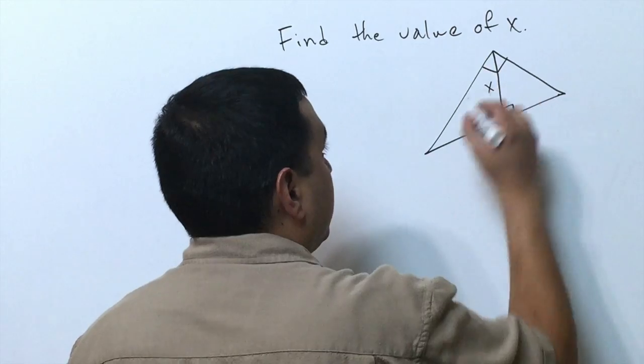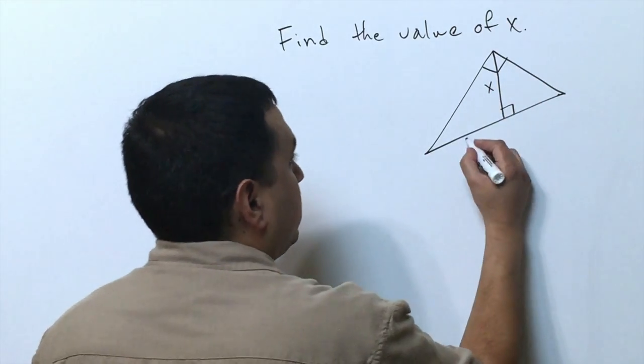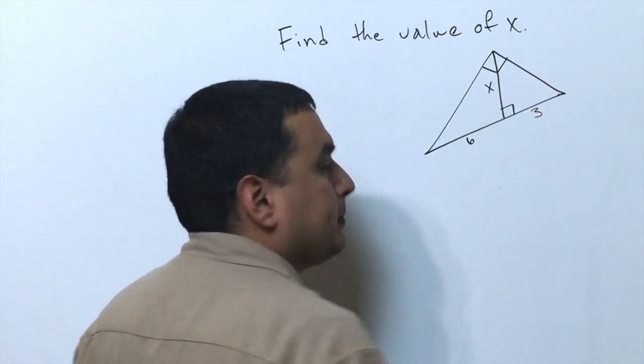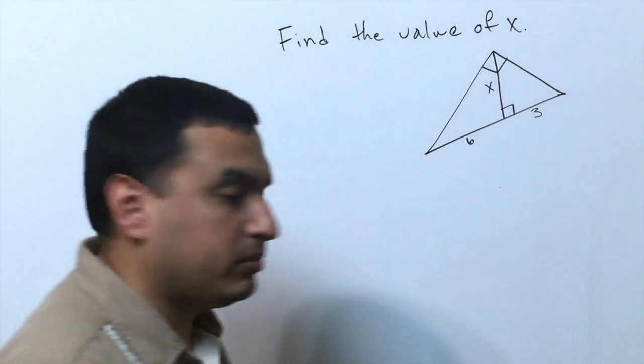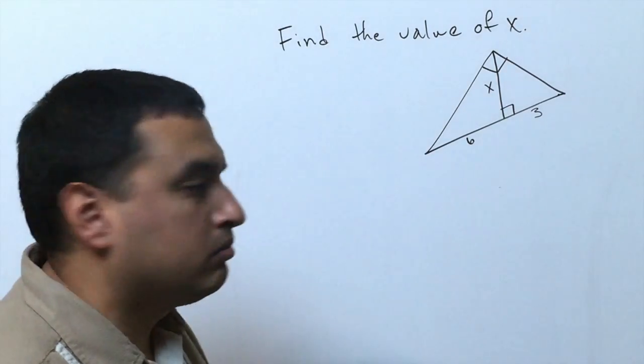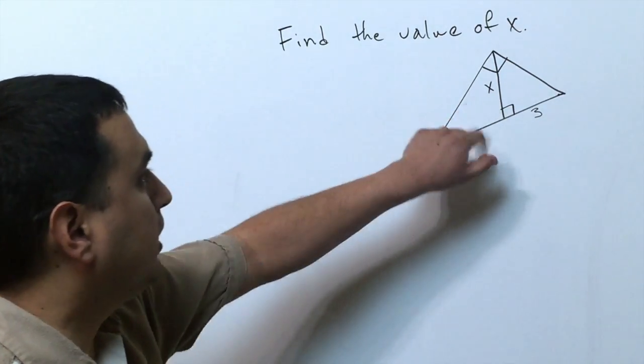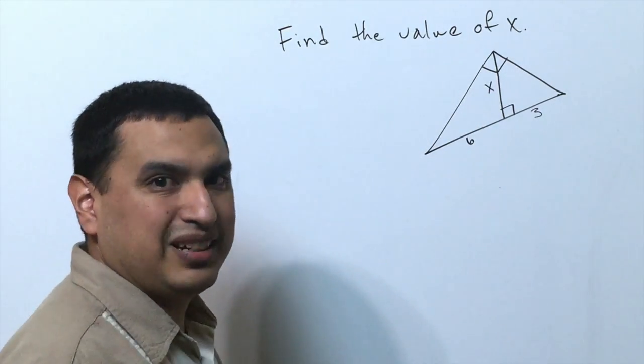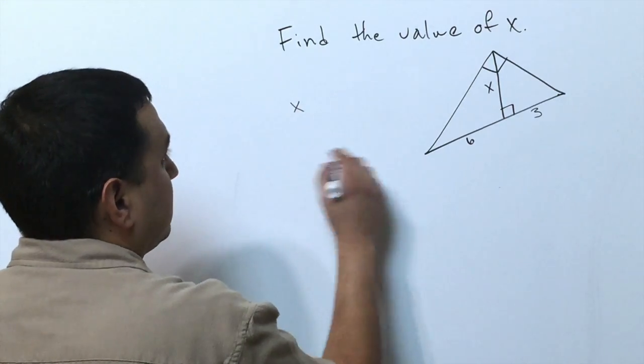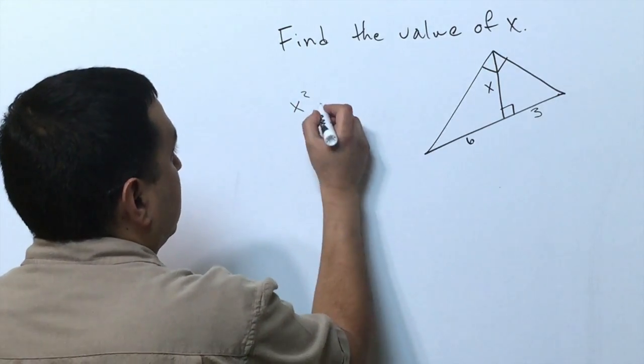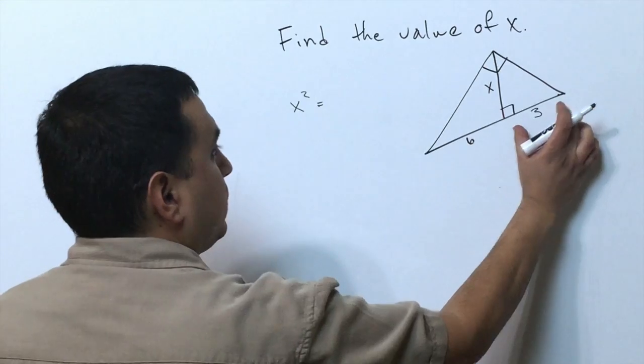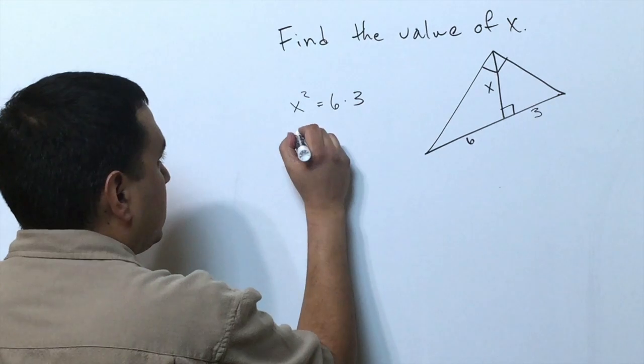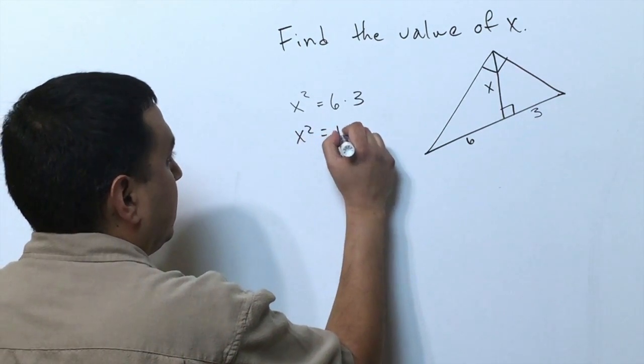If I have this value here that I'm looking for and I know these two pieces—this distance is 6 and this distance is 3—I can use the geometric mean formula. This geometric mean altitude theorem says that x squared is going to equal the product of these two pieces. In this case, that's 6 times 3, so x squared equals 18.